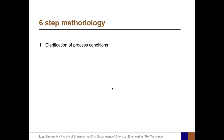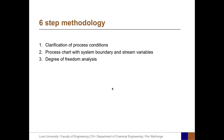The six-step methodology is as follows: Step one is clarification of process conditions. Step two is to draw a process chart with clear system boundaries and all the stream variables. Step three is to perform a degree of freedom analysis to determine whether a system can be solved or not. Step four is to develop the system of equations. Step five is to perform a computer-aided solution. Step six is to present a clear answer to the problem.